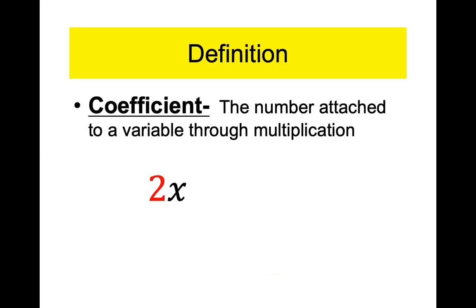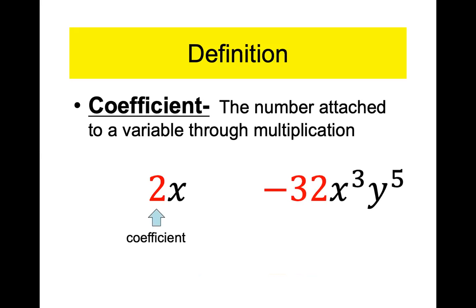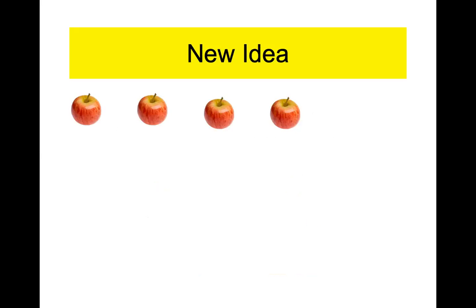Two is the coefficient. A coefficient is a fancy word for a number in front of a letter — a number attached to the variable through multiplication. What's the coefficient here? Negative 32 is the coefficient. The coefficient includes whether it is positive or negative, so you must say negative 32, not just 32.